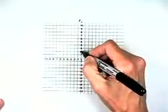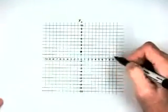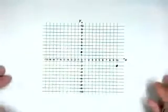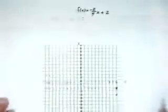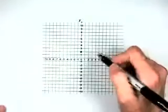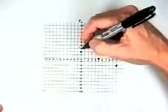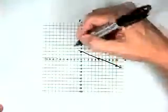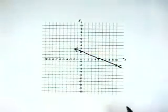Starting with 0, 2, then positive 10, negative 2, and then the third ordered pair is 5 in the x direction, 0 in the y direction. Connecting these, we end up with the graph of our line.